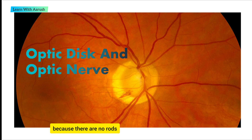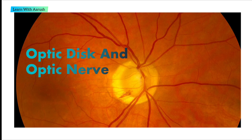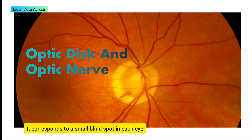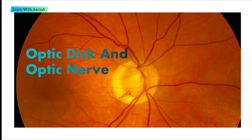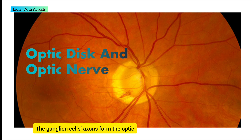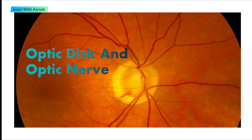Because there are no rods or cones overlying the optic disc, it corresponds to a small blind spot in each eye. The ganglion cells' axons form the optic nerve after they leave the eye.